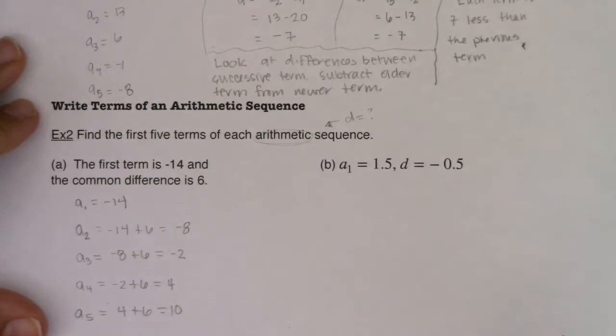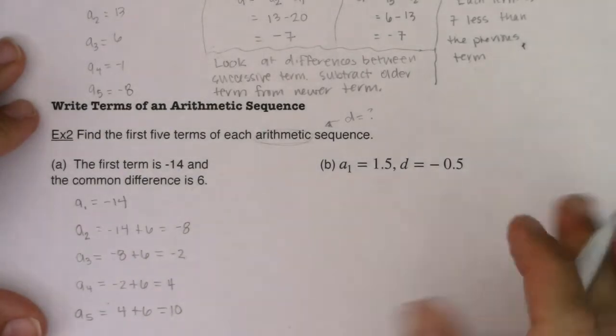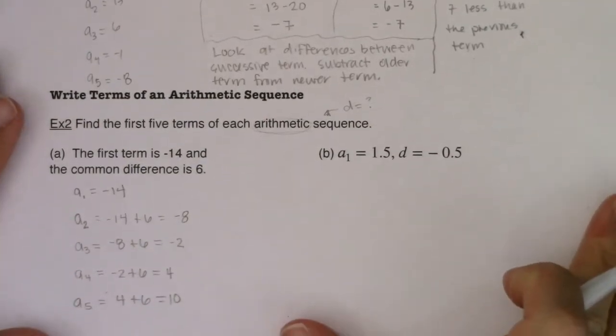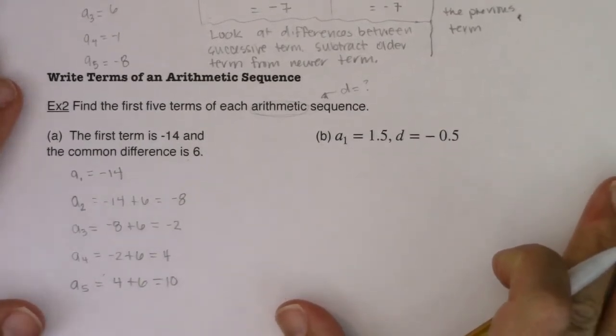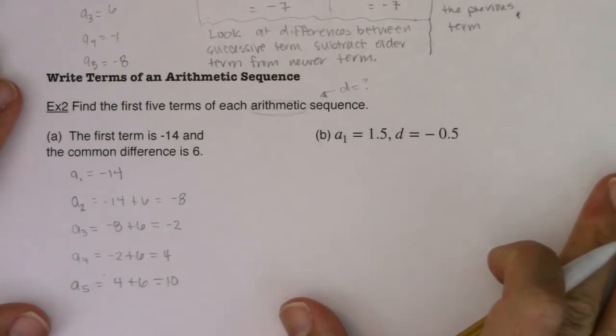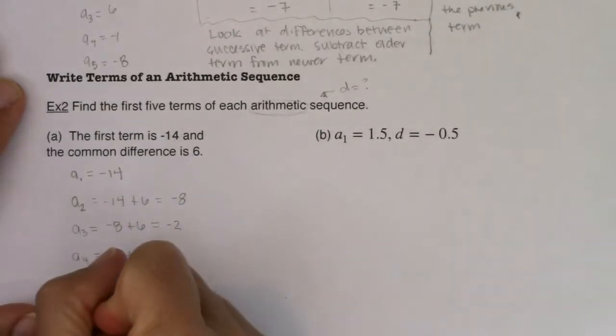And there's my sequence. So I can go ahead, let me scooch this up just a bit so we can write out the terms in the sequence. So I could say here, give me one moment, there we go, that my sequence was, it started at negative 14.